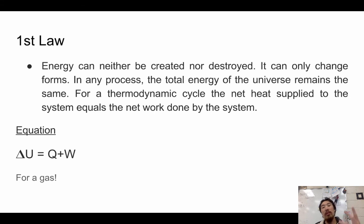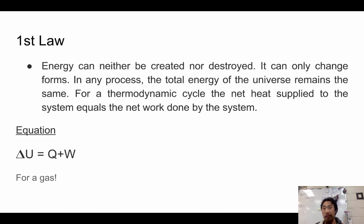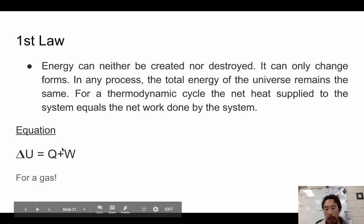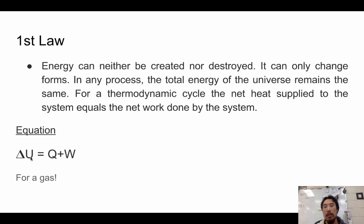The first law: energy can neither be created nor destroyed — that's conservation of energy. It can only change from one form to another, whether kinetic to potential, breaking chemical bonds, or potential to kinetic. The total energy of the universe will always remain the same. For a thermodynamic cycle, the net heat supply equals the net work done: delta U = Q + W, where delta U is the change in energy, Q is heat, and W is work.